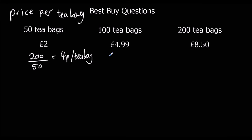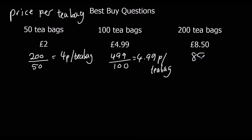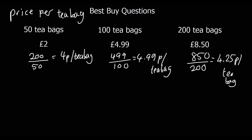For the next option, 499p divided by 100 gives 4.99 pence per tea bag. And 850p divided by 200 gives 4.25 pence per tea bag — you can use the calculator. So which is the best value for money? The lowest price is the 50 tea bag pack, so 50 tea bags is the best value for money.